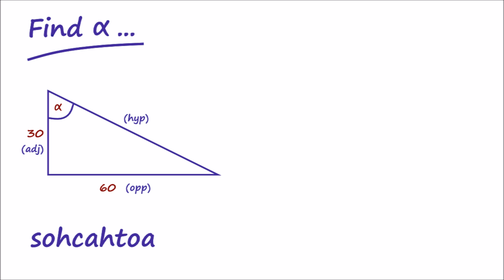Again, the word sohcahtoa reminds us that if we know the opposite and adjacent sides, as shown, we need the tangent relationship, where tan alpha equals the opposite divided by adjacent length. It's worth noting that the unit of length is not important here, because the value we obtain is a ratio of length rather than the length itself, and is therefore unitless.